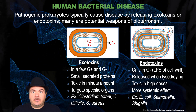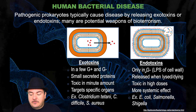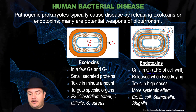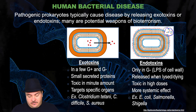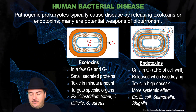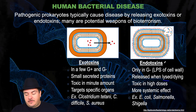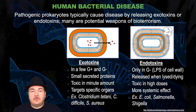The other way bacteria can cause humans harm is through endotoxins. These endotoxins occur only in gram-negative bacteria, because the lipopolysaccharides that make up the outer membrane of the cell wall in gram-negative bacteria are toxic. These lipopolysaccharides are only released from the membrane whenever the bacteria is lysed — broken open and dying. They are toxic in high doses and cause more of a systemic effect. So these are the two types of toxins from bacteria: exotoxins and endotoxins.